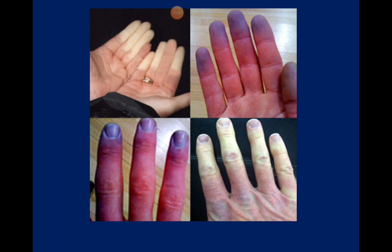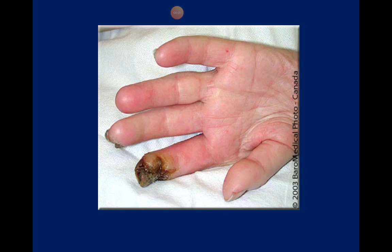Raynaud's can be considered a very common association with connective tissue disorders. It can be either primary — a standalone condition due to idiopathic vascular spasm, more common amongst smokers and people who don't keep warm — or secondary, occurring alongside connective tissue disorders. Raynaud's can sometimes be so severe that it causes tissue loss, including loss of fingertips, and therefore must be dealt with seriously.